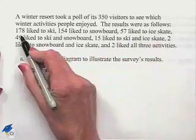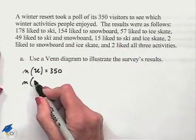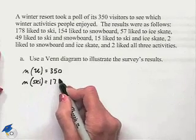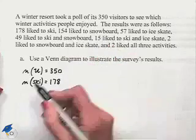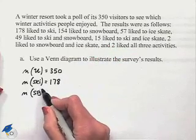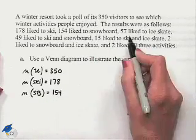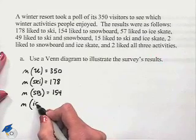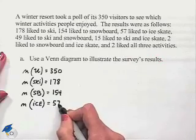178 like to ski, so the number in the set who like to ski is 178. 154 like to snowboard, so the number who like to snowboard — I'll use SB for that — equals 154. 57 like to ice skate, so the number who liked ice skating, let's call it ice, equals 57.